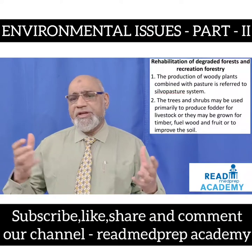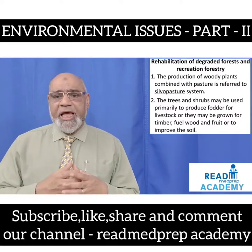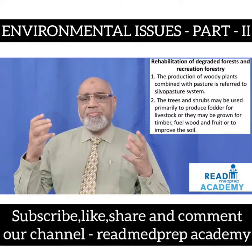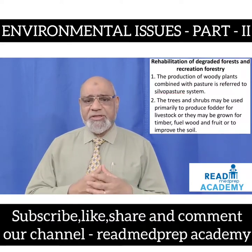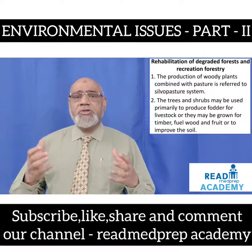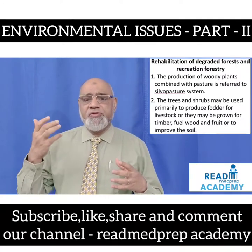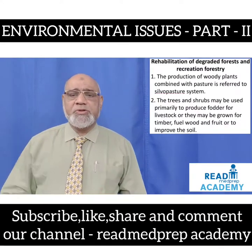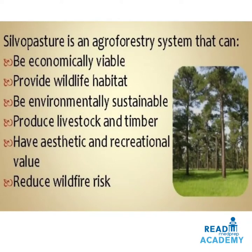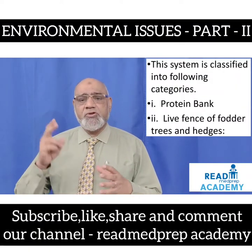Rehabilitation of degraded forests and recreation forestry helps in the production of woody plants combined with pasture. This is referred to as the silvopasture system. Trees and shrubs may be used primarily to produce fodder for livestock, or they may be grown for timber, fuel, wood and fruit, or to improve the soil. Silvopasture is an agroforestry system that can be economically viable, provide wildlife habitat, be environmentally sustainable, produce livestock and timber, have aesthetic and decorational value, and reduce wildfire risk. This system is classified into two categories.